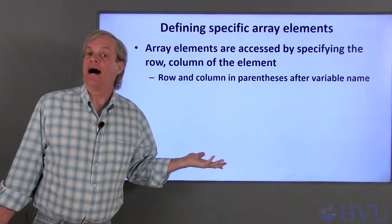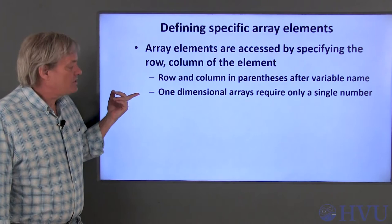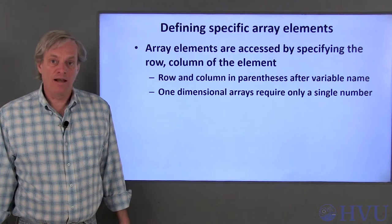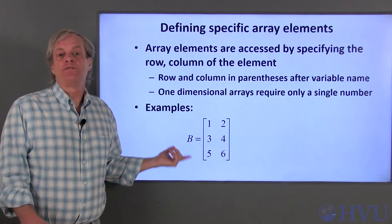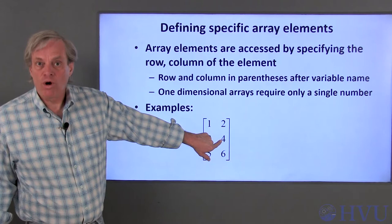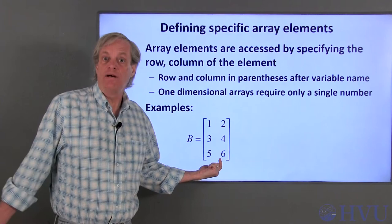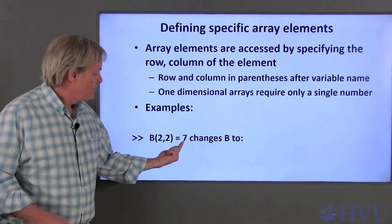Elements of one-dimensional arrays can be addressed by a single number. If the array has a single column, use the row number; if the array has a single row, use the column number. For example, suppose this array exists in the workspace and I want to assign values to specific locations. Let's replace the number 4 with the number 7. That number is in the second row and second column of the array. The syntax is to assign 7 to the element of B in the second row and second column. None of the other elements are affected.